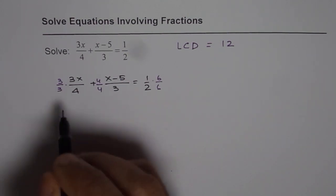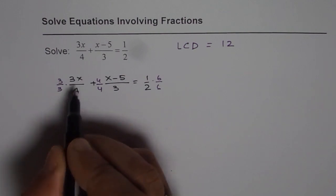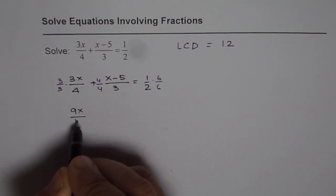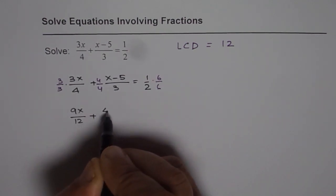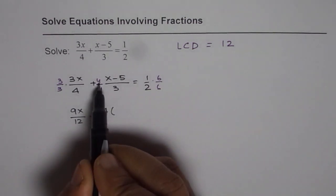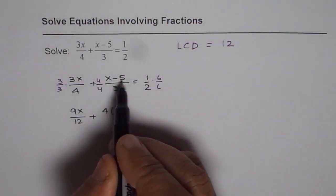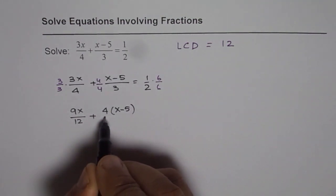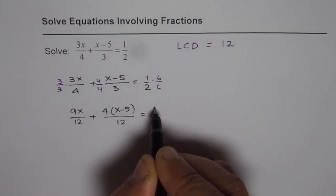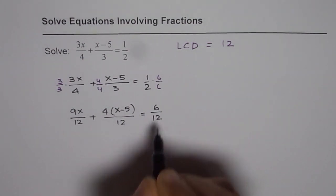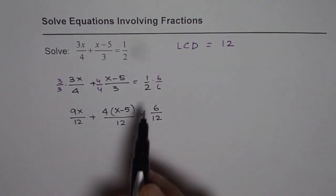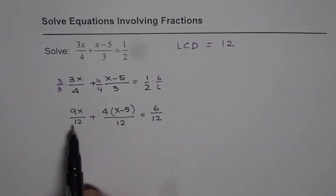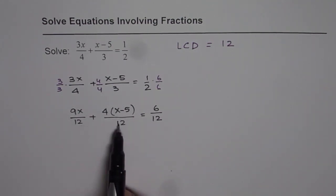So I am adding this step and just showing you. When you multiply you get 9x over 12 plus 4 times x minus 5. Don't just multiply x with 4, minus 5 should also be multiplied by 4 over 12, equals to 6 over 12. In doing so we get something which has the same base.